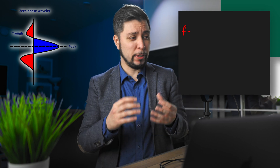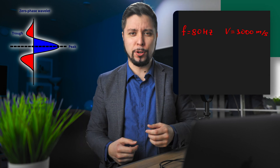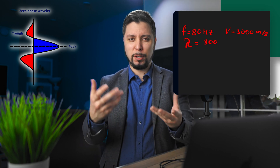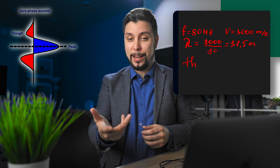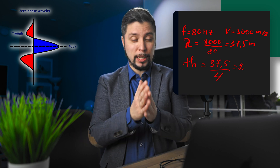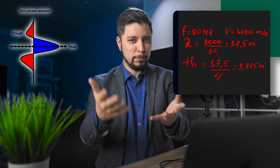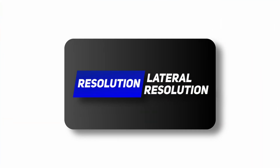For example, with a dominant frequency of 80 Hz and a seismic velocity of 3000 meters per second, the minimal thickness of a layer that can be resolved is 9.3 meters. Lateral resolution, also known as spatial resolution, refers to the minimal lateral distance between two geologic objects that can be imaged individually.